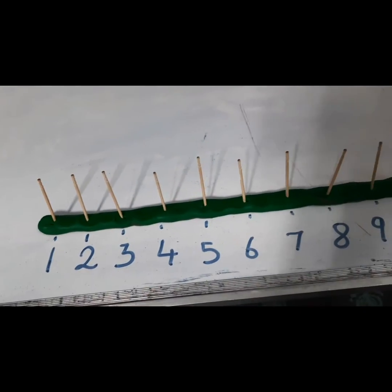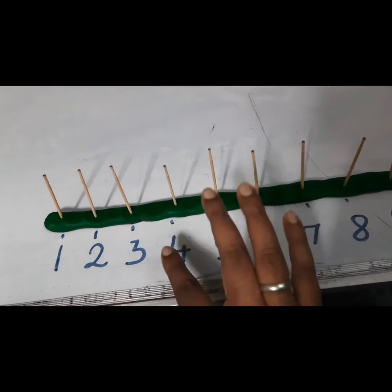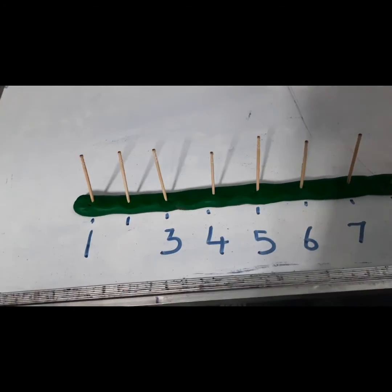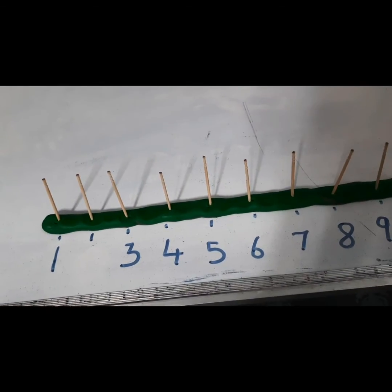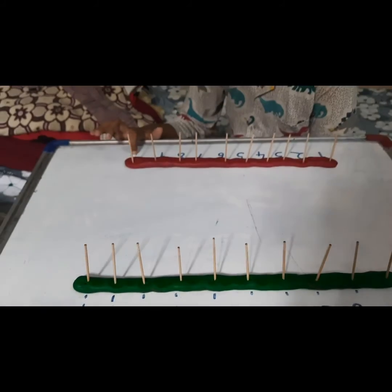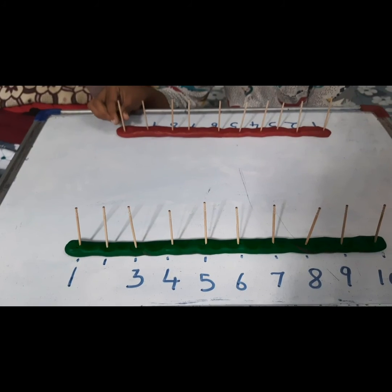The number line concept can be very clear with this method. You can also ask, after playing, about missing numbers - what is missing here? So the child will be able to identify and write the missing number. This is a very good method for teaching counting. Do try this method with your child. Hope this video helps. Thank you everyone!